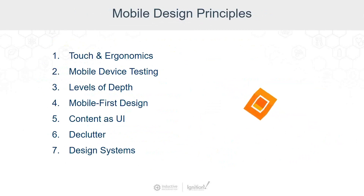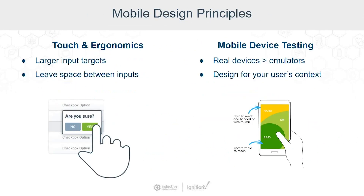So quickly I'm going to go through these mobile design principles. The first mobile design principle to consider in your mobile apps is touch and ergonomics. Really boiling this down to its simplest form, you essentially want to have larger input targets on mobile because they're touch-friendly.